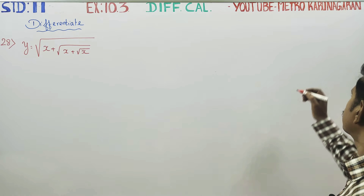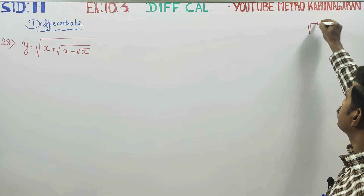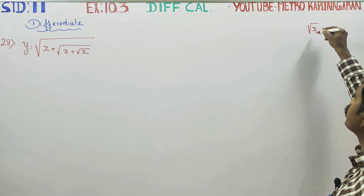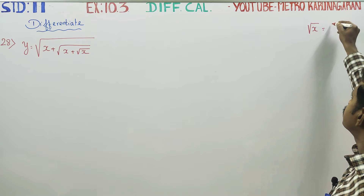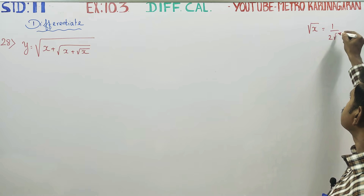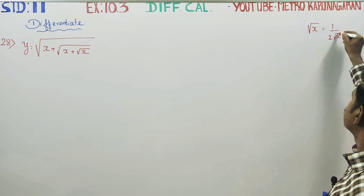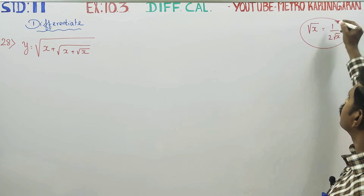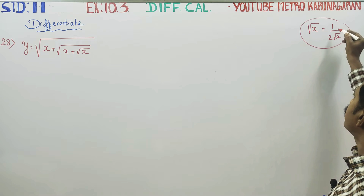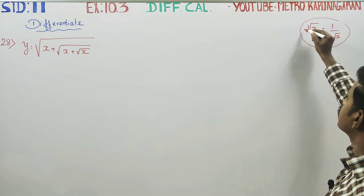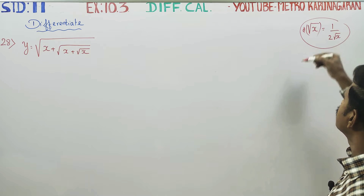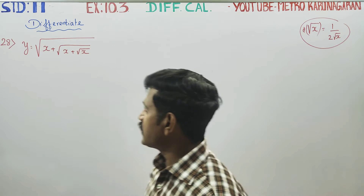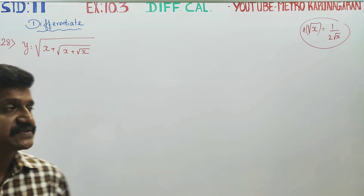This sum is going to use a small formula that you should remember. You have to recall: root x differentiated is 1 by 2 root x. The differentiation of root x is 1 by 2 root x. In the formula, it is a very simple sum.